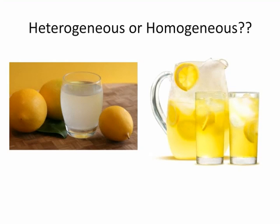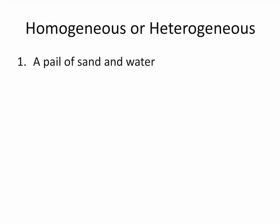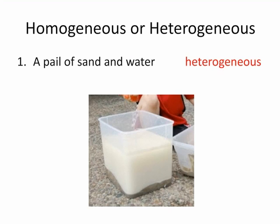I think we're ready to try some practice using these terms. A pail of sand and water — homogeneous or heterogeneous? Heterogeneous. The mixture is not uniform. When the sand settles to the bottom, the mixture has more sand at the bottom of the pail than at the top. The mixture is not uniform; therefore, this mixture must be heterogeneous.